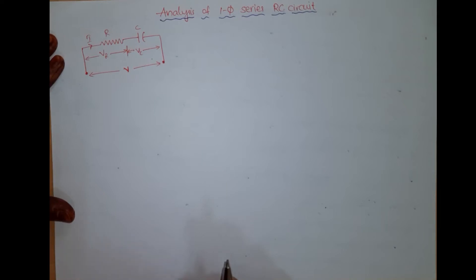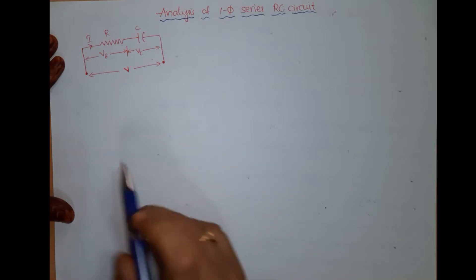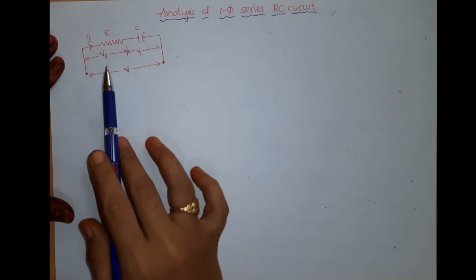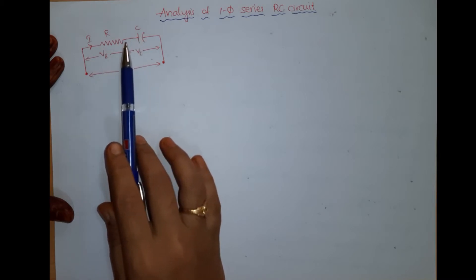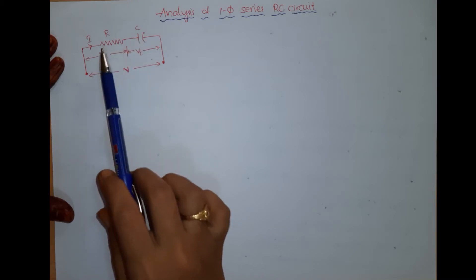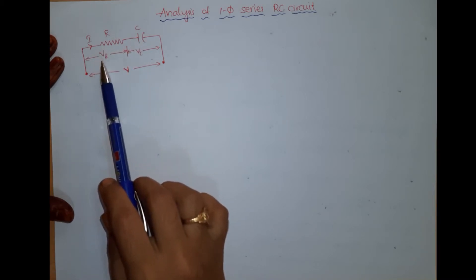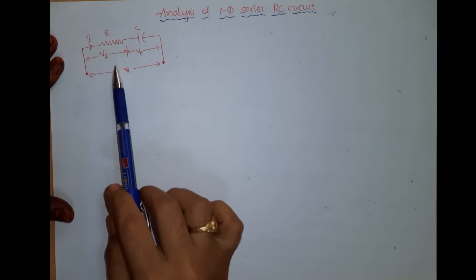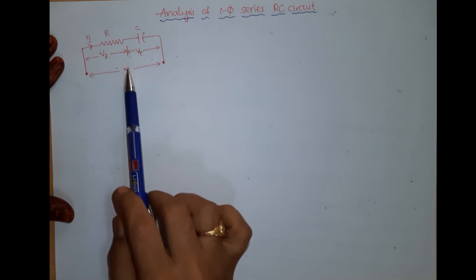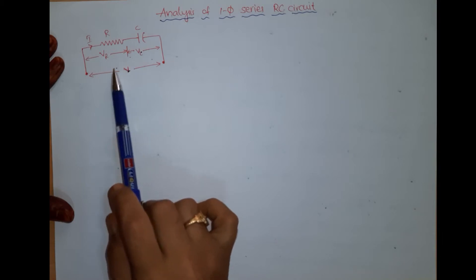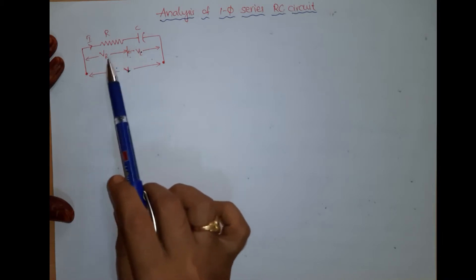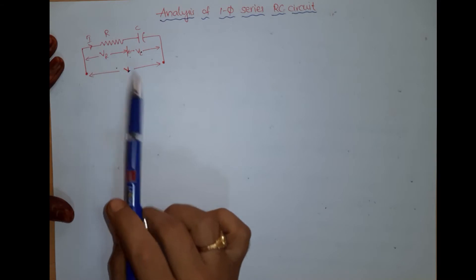Hello everyone. In this lecture let us see the analysis of a series RC circuit. Here I have taken a series circuit in which resistor and capacitor are connected in series, and the voltage across resistance and capacitance are split into two different parts from the given supply voltage. The given supply voltage is being divided between both the resistor and capacitor in series.